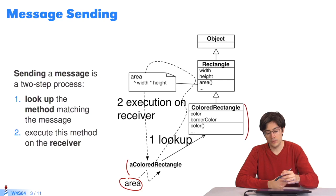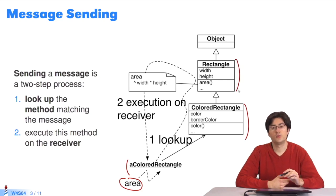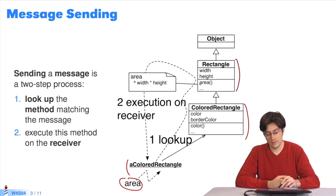But area is not there, so the algorithm searches the superclass. In Rectangle, it finds area. The method is executed on the receiver.